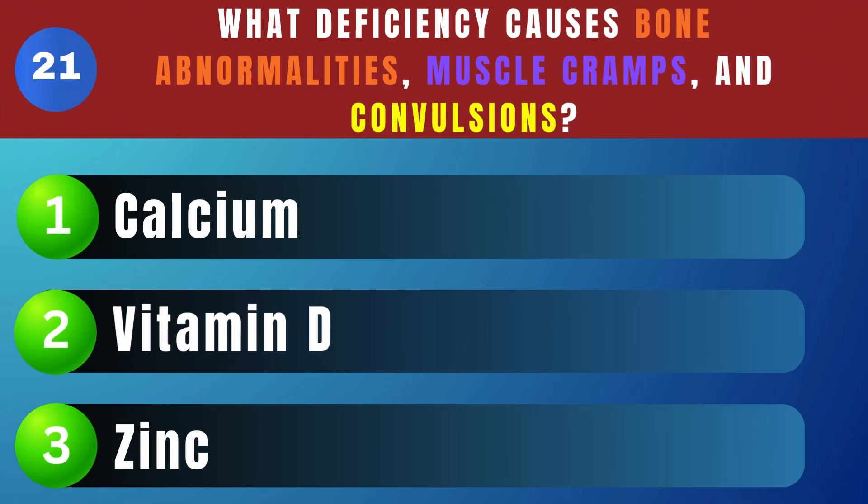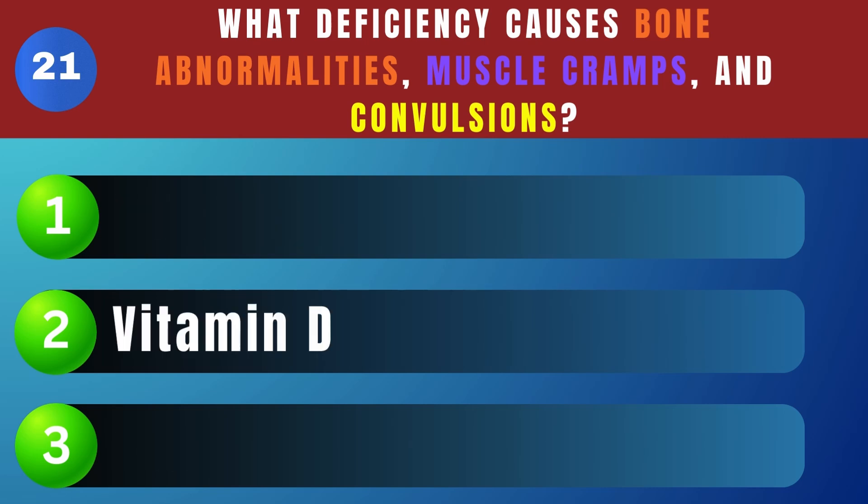What deficiency causes bone abnormalities, muscle cramps, and convulsions? Vitamin D.